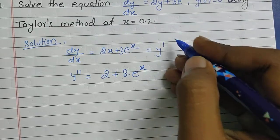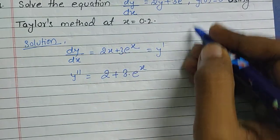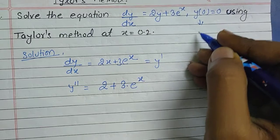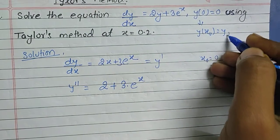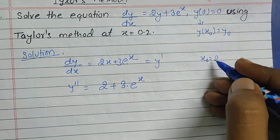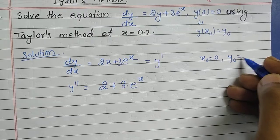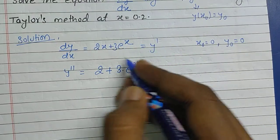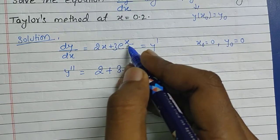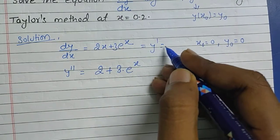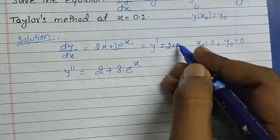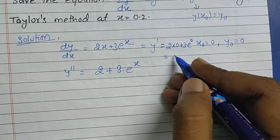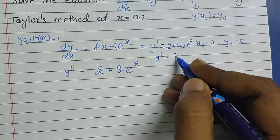From the given conditions, x naught is equal to 0. This is written as y(x₀) = y₀, so on equating we get x₀ = 0 and y₀ = 0. If we find the value of y' by putting x₀ into the equation: y' = 2(0) + 3e^0 = 3 × 1 = 3.